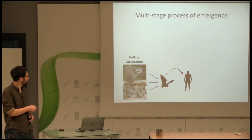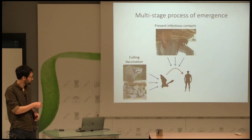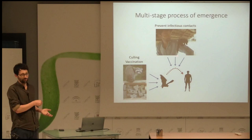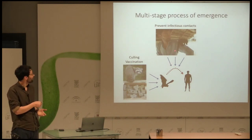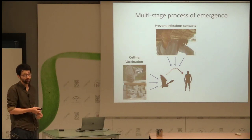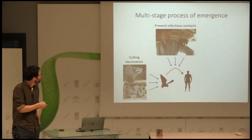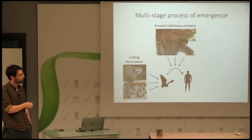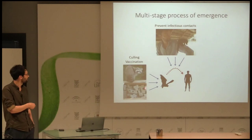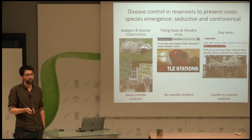For example, if we wanted to intervene within the natural reservoir, we could do things like culling or potentially vaccinate the natural host. If we wanted to intervene at the second stage, we could educate people to prevent risky behaviors that might lead to contacts with wild animals. Or maybe we can just vaccinate people.